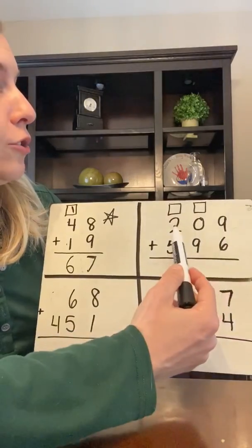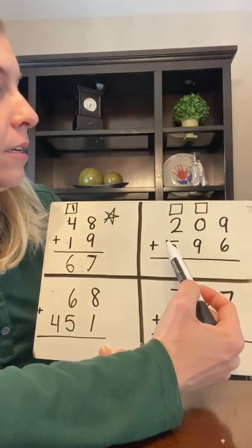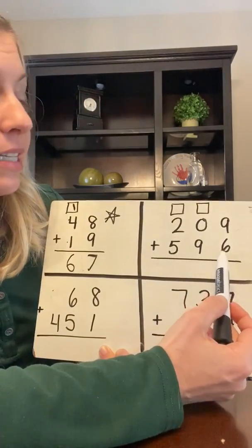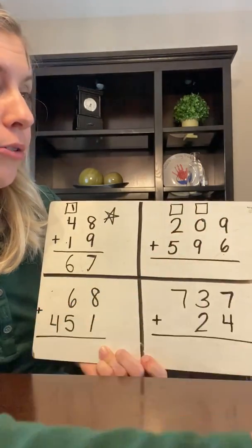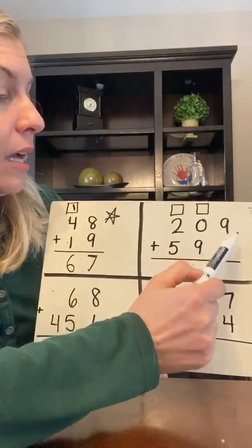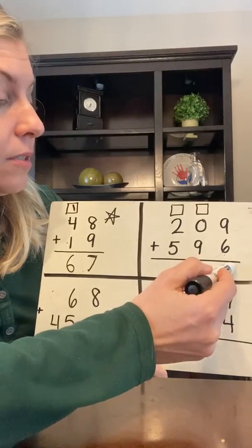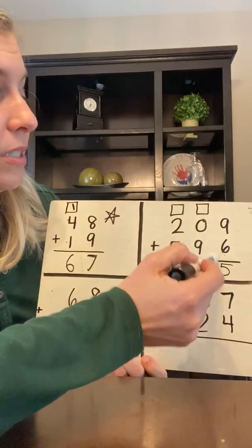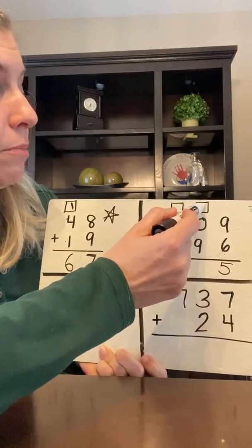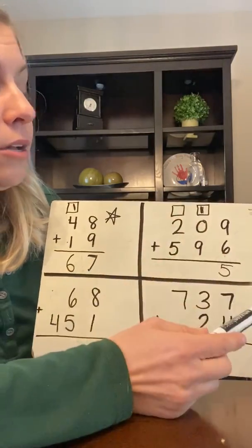The next one says 209 plus 596. So we look at the ones. I'm going to start all the way over in the ones. Nine plus six was 15. I can't put the one here, the group of 10. It has to move it, move it up top to the tens place.